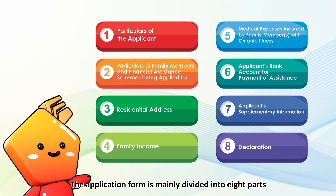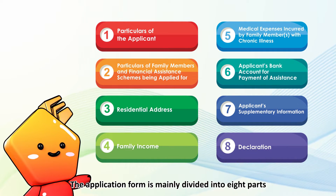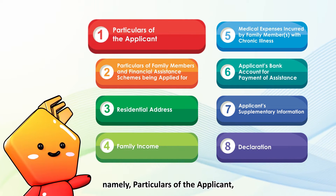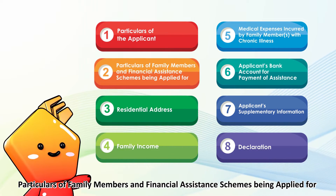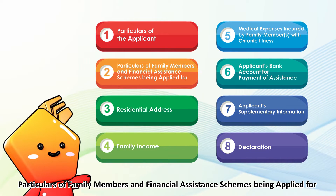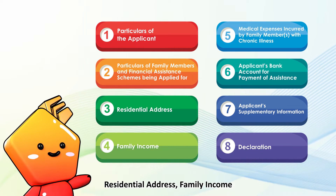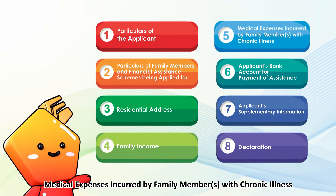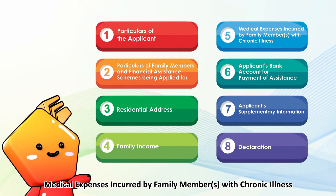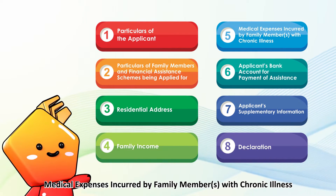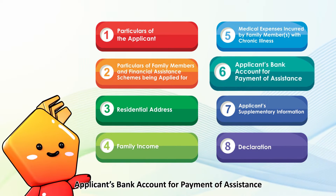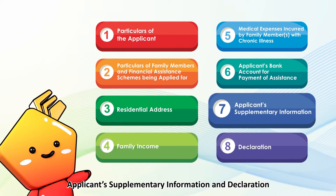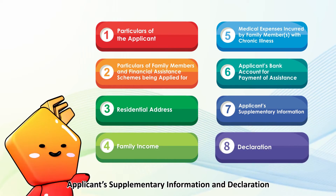The application form is mainly divided into eight parts, namely: Particulars of the applicant; Particulars of family members and financial assistance schemes being applied for; Residential address; Family income; Medical expenses incurred by family member or members with chronic illness; Applicants' bank account for payment of assistance; and Applicants' supplementary information and declaration.